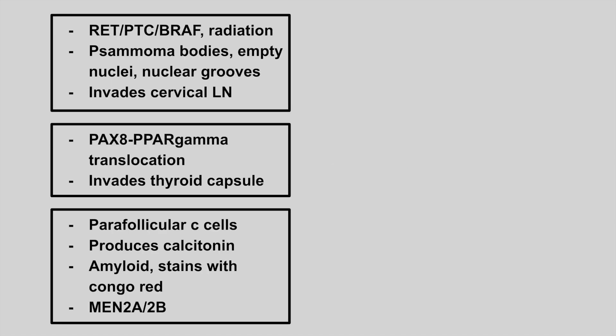The next patient can have a RET, PTC, or BRAF mutation, or a history of radiation therapy. Psammoma bodies, empty nuclei, and nuclear grooves are seen on histology, and it's going to invade the cervical lymph nodes. This is papillary carcinoma.